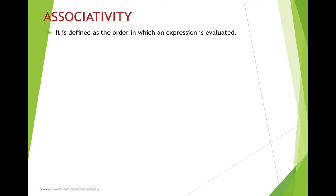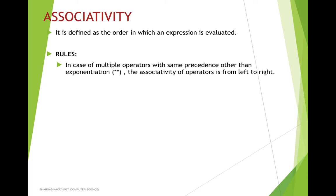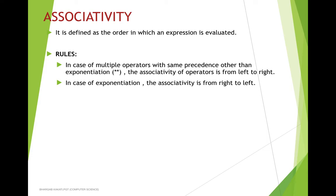Next we come to the concept of associativity. Associativity is defined as the order in which an expression is evaluated — which operator is first, which is second, which is third. In case of multiple operators with the same precedence, the associativity of operators is from left to right. But in case of the exponentiation operator — which is the double star — the associativity is from right to left.